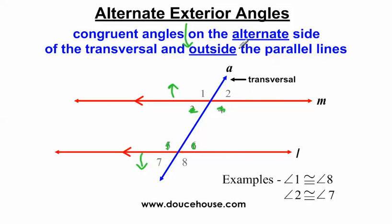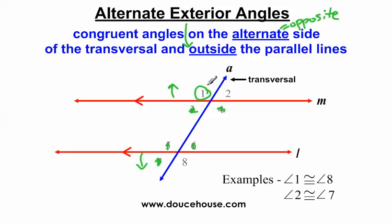Looking at the alternate side of the transversal - what is an angle on the opposite side that is also going to be congruent? If I focus on angle one, seven is eliminated because it's not on the opposite side of the transversal. Does angle one look like angle two or angle eight? Angle one is obtuse, angle two is acute so it can't be it, and angle eight is also obtuse. So angle one and eight are an example of alternate exterior angles.